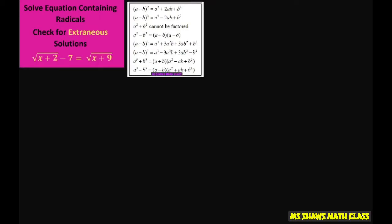So the first thing I'm going to do is write our equation down. We have square root of x plus 2 minus 7 equals the square root of x plus 9.